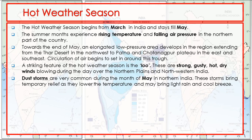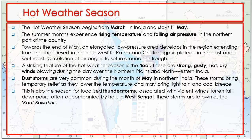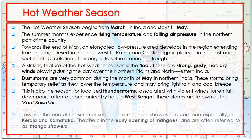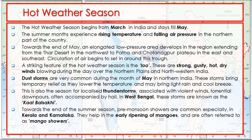This is also the season of localized thunderstorms associated with violent wind and torrential downpours often accompanied by hail. In West Bengal, these storms are known as Kalbaisakhi. Towards the end of the summer season, pre-monsoon showers are common, especially in Kerala and Karnataka. They help in the early ripening of mango and are often referred to as mango showers.